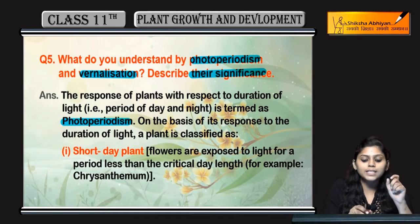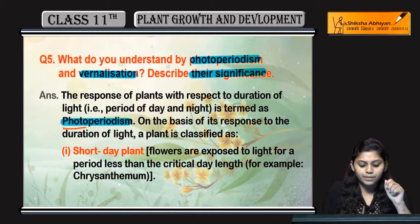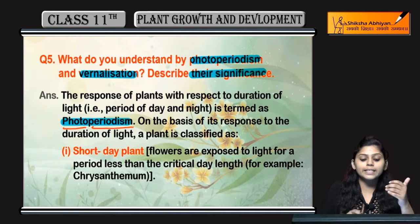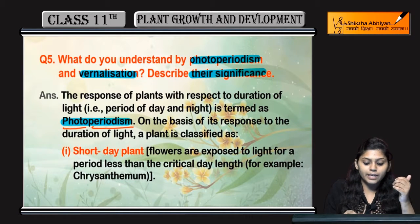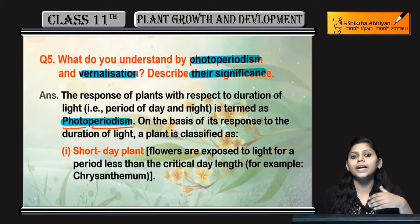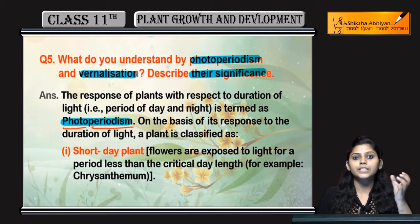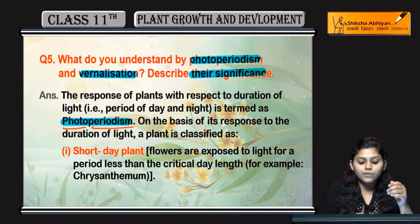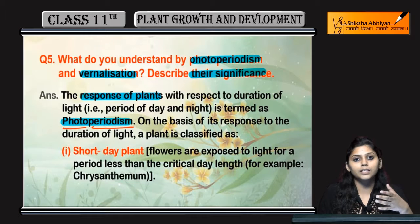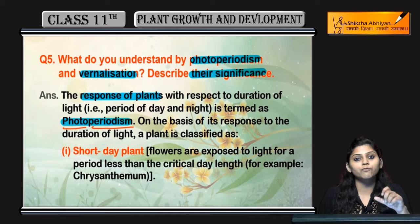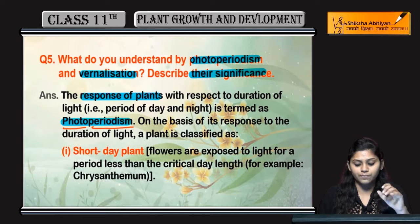Photo means light and period means time. So, how much time a plant has light exposure, which determines the response of the plant — whether it grows or not. This is photoperiodism.